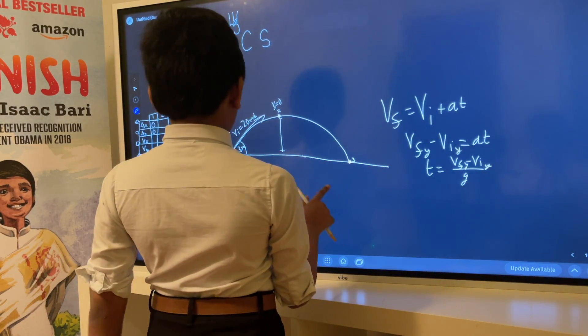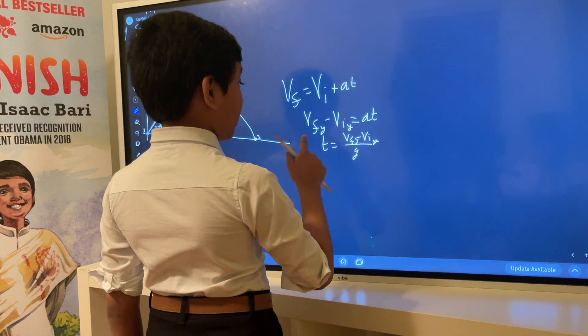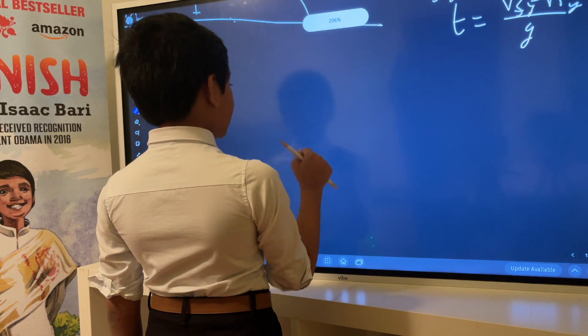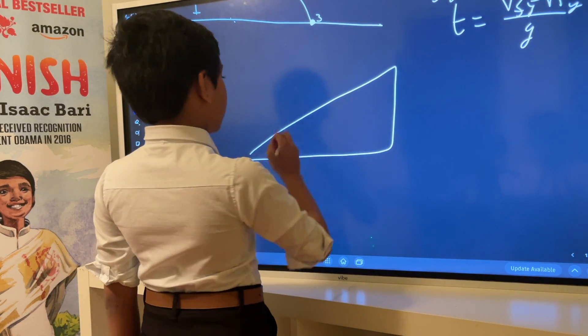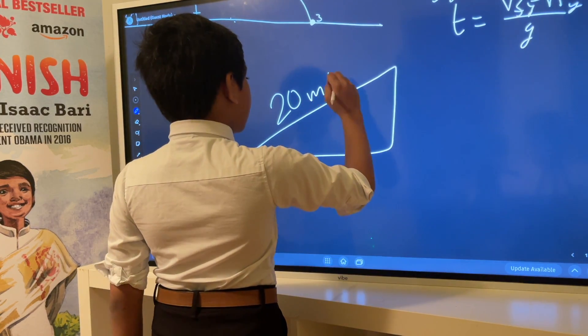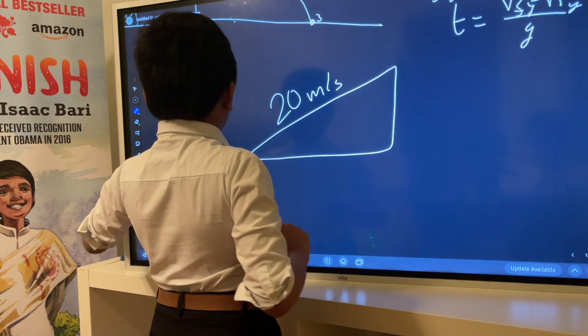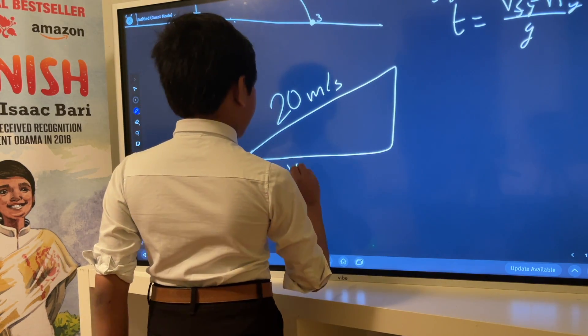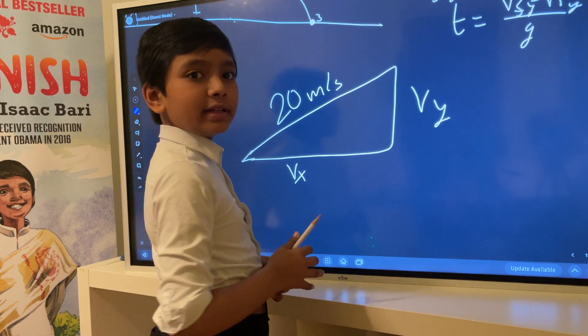We filled in the blanks. Now what do we have to do? We need to find v_f_y, v_i_y, and v_i_x. We can easily do that using some triangles. We know that these two velocities combined, these two vectors, combined to make an initial velocity of 20 meters per second. This is v_x and this is v_y. This is not to scale.